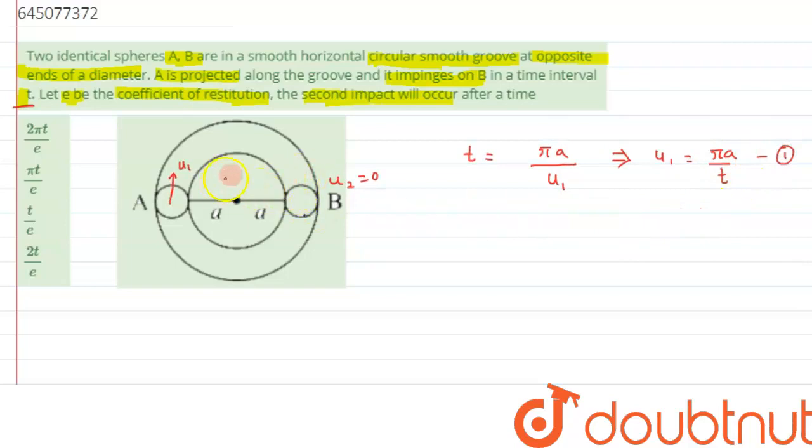After the first collision, sphere B will start moving with velocity v₂, and sphere A will rebound back with velocity v₁.